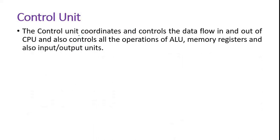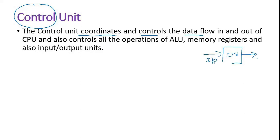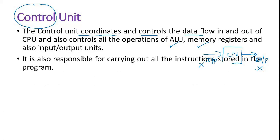The control unit — as the name suggests, it controls. It coordinates and controls the data flow in and out of the CPU. It controls the operations of the ALU, memory registers, input units, and output units. All these things are controlled and coordinated by the control unit. It is responsible for carrying out all the instructions stored in the program.